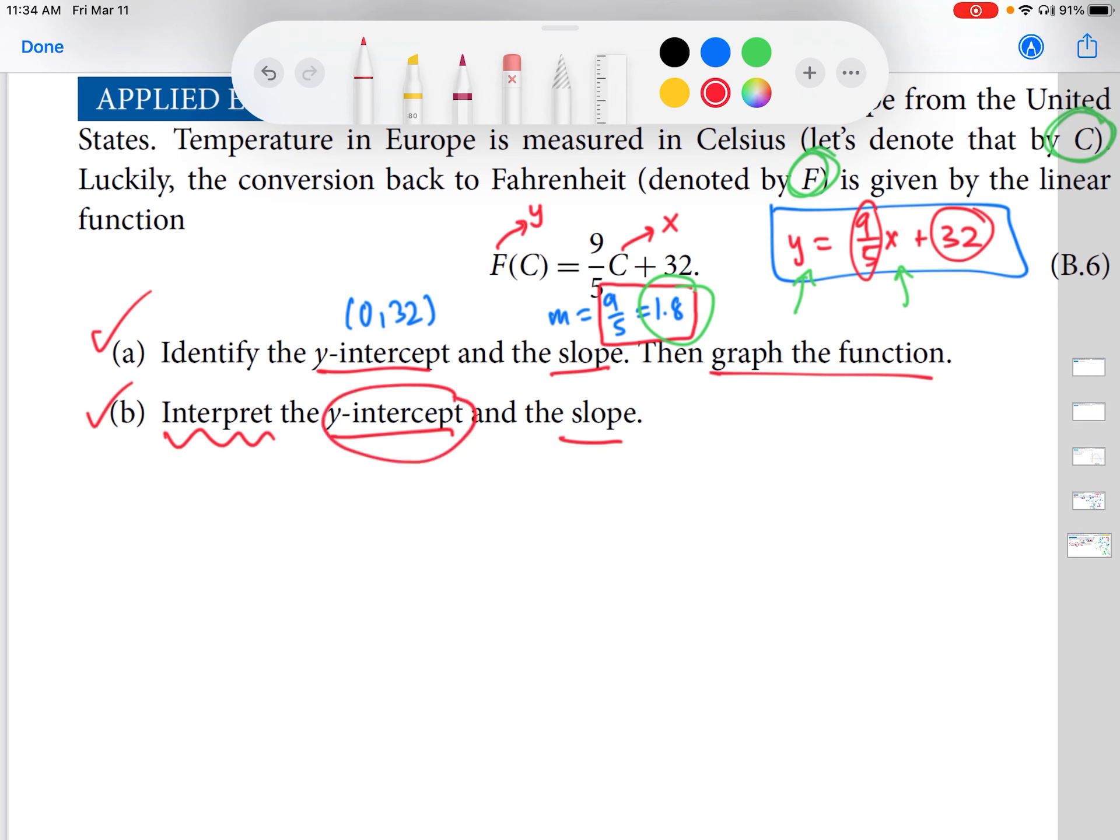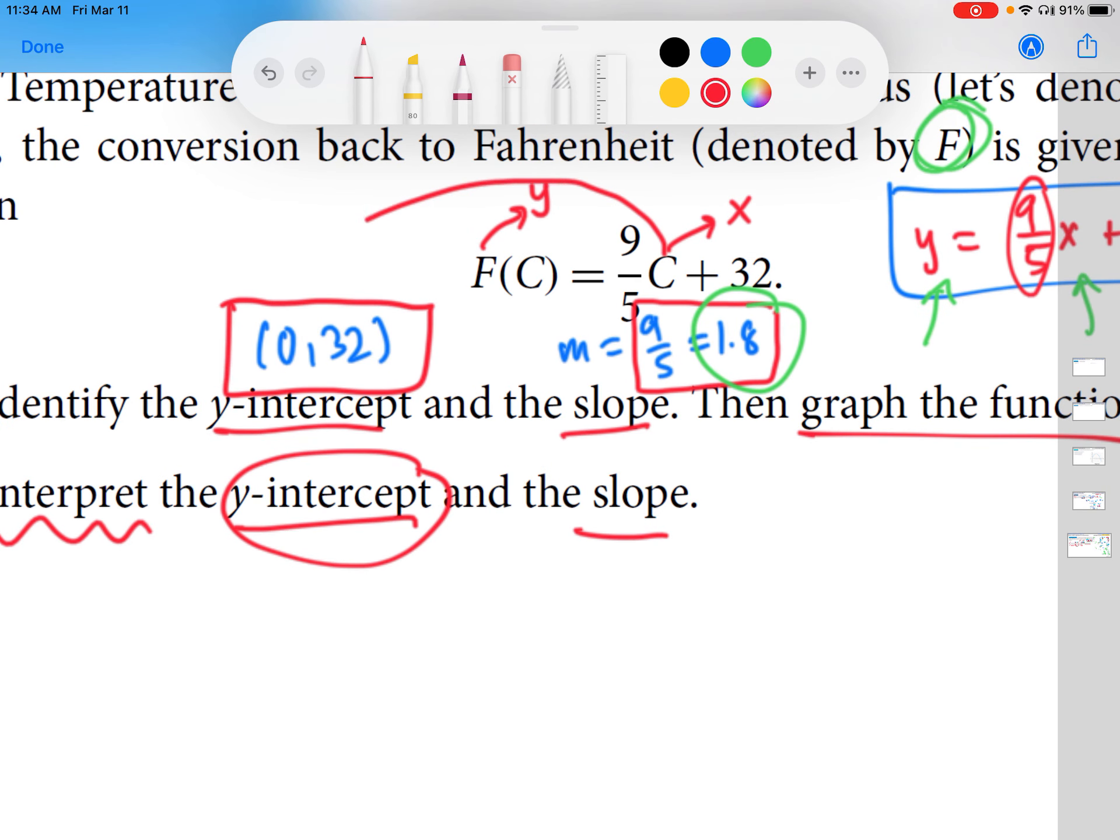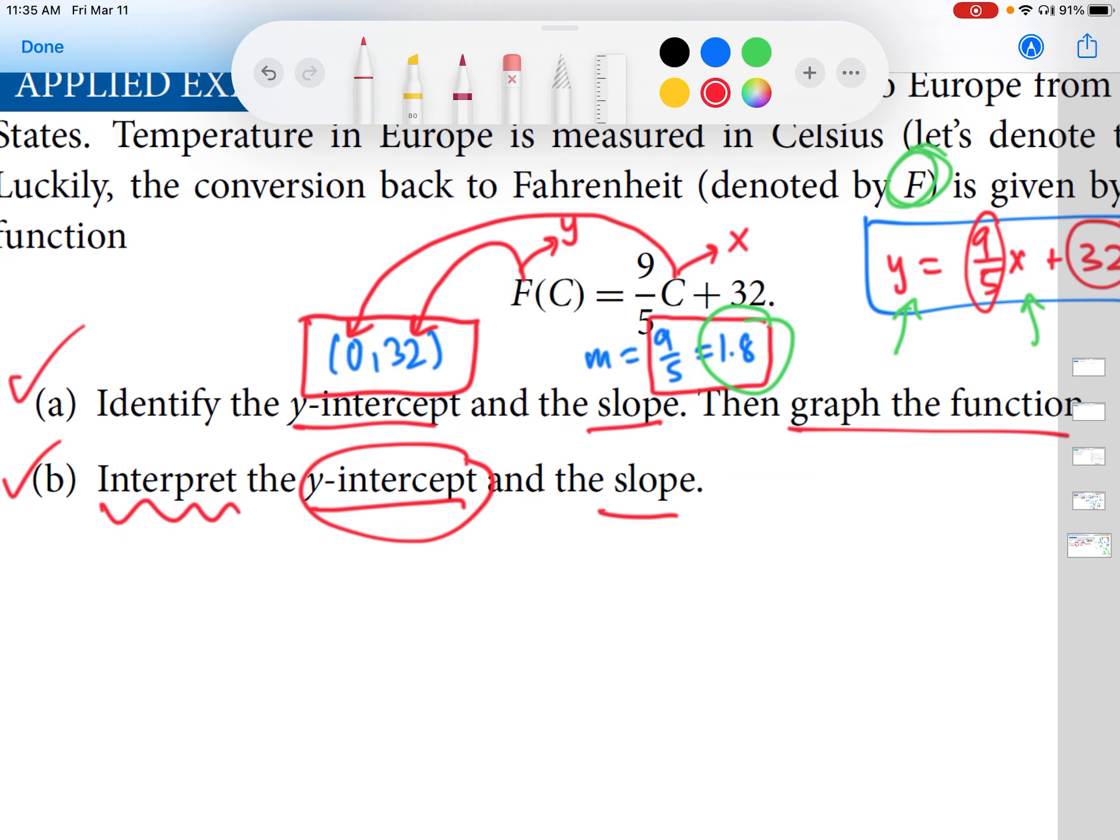Let's interpret the y-intercept first. The y-intercept is (0, 32). If you told somebody, hey, the y-intercept of this function is (0, 32), they would say, I have no idea what that means. However, if you told them that when the temperature measured in Celsius is 0 degrees, then the temperature measured in Fahrenheit is 32 degrees, that would make much more sense. Said another way, a 0 degrees Celsius temperature converts to a 32 degrees Fahrenheit temperature. That makes a lot of sense, and it's really useful, especially if you're traveling between countries that use these temperature systems. So, we've interpreted the y-intercept.